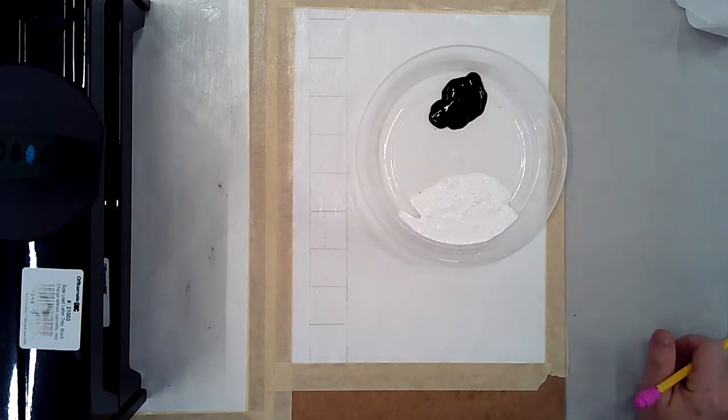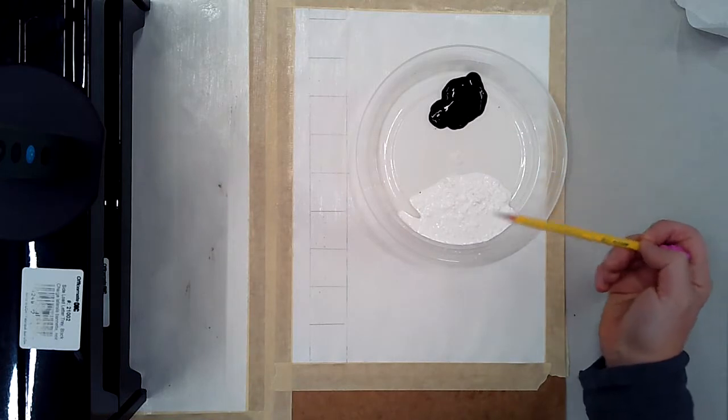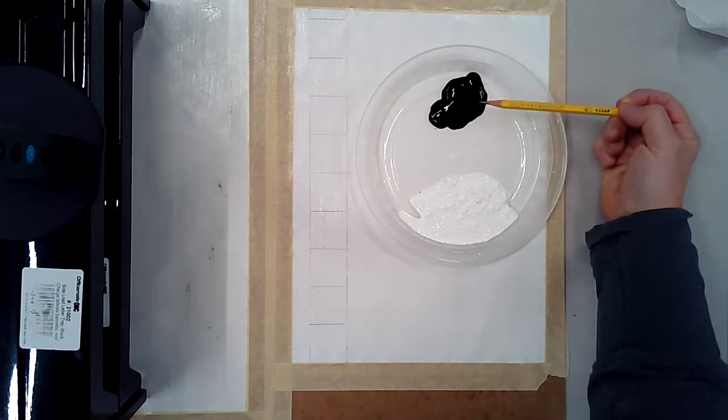So if you remember, one of our elements of art is value, and value means a range of light to dark. So I have some black, I have some white, I'm going to create all the values in between there and make this an even transition between these two hues.